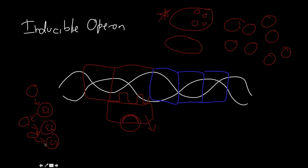Enzyme 1 breaks the lactose apart in a certain way, enzyme 2 takes it further, and enzyme 3 breaks it down to the most simple molecule the cell can actually use. This pattern is seen more in catabolism because if something isn't present that needs to be broken down, why should the cell waste energy making enzymes for it? Only when a molecule becomes available does it bind the repressor, the repressor falls off, and the cell makes the enzymes to break down that specific molecule.